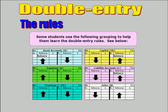Revenue accounts — the primary one is sales. The double entry accounting rules say that to increase revenue, or sales in this case, you use a credit entry.